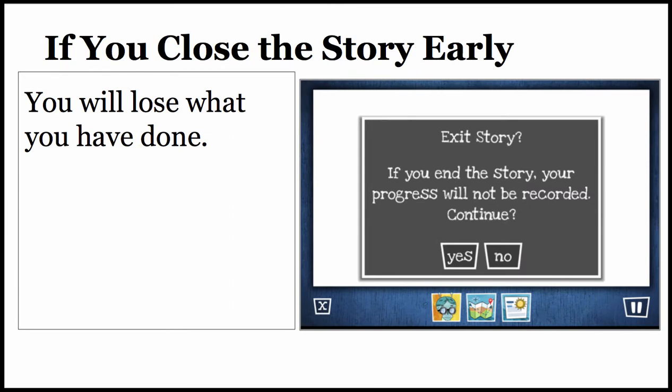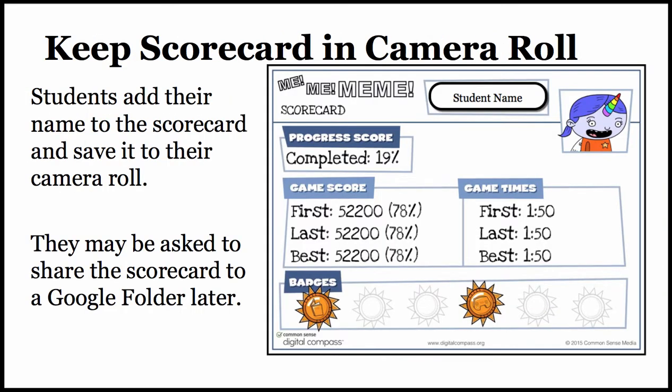As you work through the story, you will see this screen. The X in the bottom left — if you click that, it's going to ask if you are sure because no progress will be recorded. At the bottom you can see the scenario, a map of all the different possible combinations, and the last little icon there is the actual scorecard. You're going to keep your scorecard in your camera roll. You'll add your student name because I may end up asking you to upload your scorecard to a Google folder later.